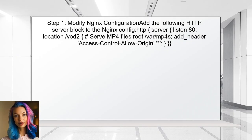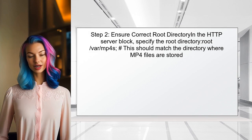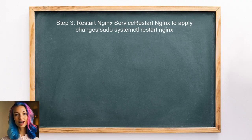First, they should add an HTTP server block to the existing RTMP configuration. Next, the user should ensure that the NGINX server is properly set up to serve the MP4 files, which involves specifying the correct root directory in the HTTP server block. After updating the configuration, the user must restart the NGINX service to apply the changes, which can typically be done with a simple command.